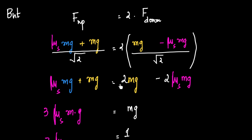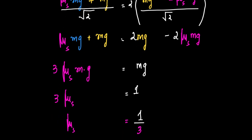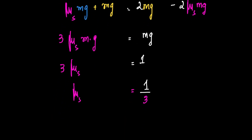Since root 2 cancels on both sides, we expand the brackets: Mg + μ_s Mg equals 2Mg minus 2μ_s Mg. Transposing: 2μ_s Mg + μ_s Mg equals 2Mg minus Mg, giving 3μ_s Mg equals Mg. Cancelling Mg, we get 3μ_s equals 1, therefore μ_s equals 1/3.